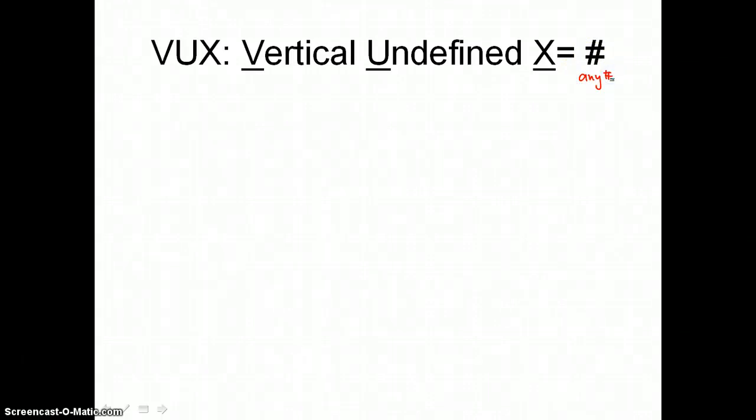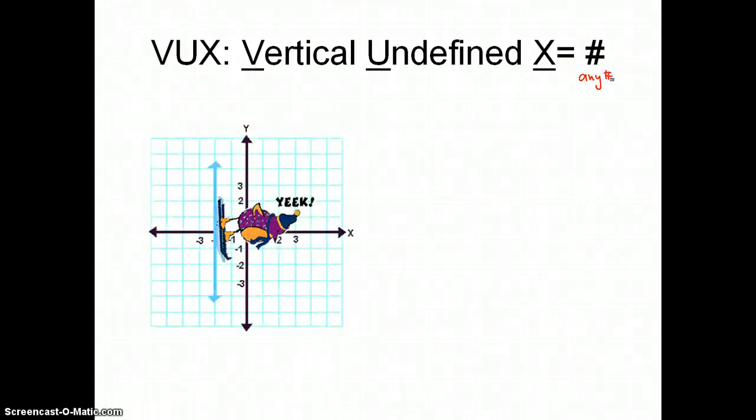When I see a vertical line, bam! This line here, if I were to write an equation, what do you think that would be? Maybe you can't tell very well, but right here is a negative 2. Yes, my equation is x equals negative 2. Very good.